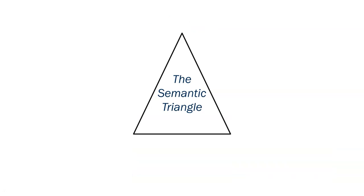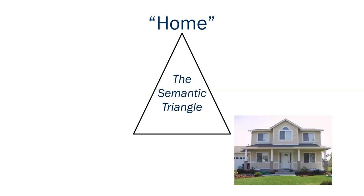However, the semantic triangle also illustrates the same symbol could lead to the same denotative meaning, but a very different connotative meaning. In this instance, we could take the same symbol of home and identify the same shared denotative meaning of a structure commonly used as a residence.